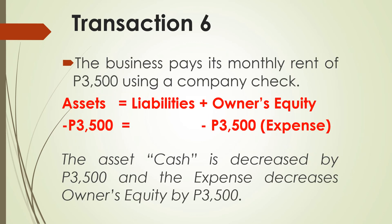Transaction number six: the business pays monthly rent of $3,500 using a company check. The asset cash is decreased by $3,500 because you are paying rent expense. The expense decreases owner's equity by $3,500 as well. Rent expense is a component of owner's equity and decreases it. So $3,500 equals $3,500, and the accounting equation is balanced.